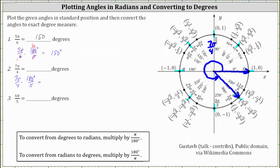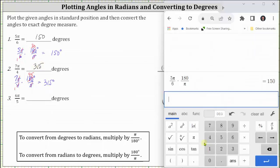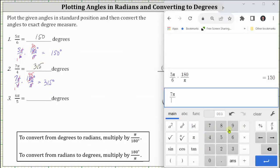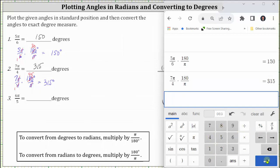To convert to degrees, we multiply seven pi divided by four by 180 degrees divided by pi. Simplifying before multiplying: pi divided by pi simplifies to one; four and 180 share a common factor of four, giving one-fourth and 45. This leaves us with seven times 45 degrees, which is 315 degrees. Checking on the calculator verifies our work is correct.